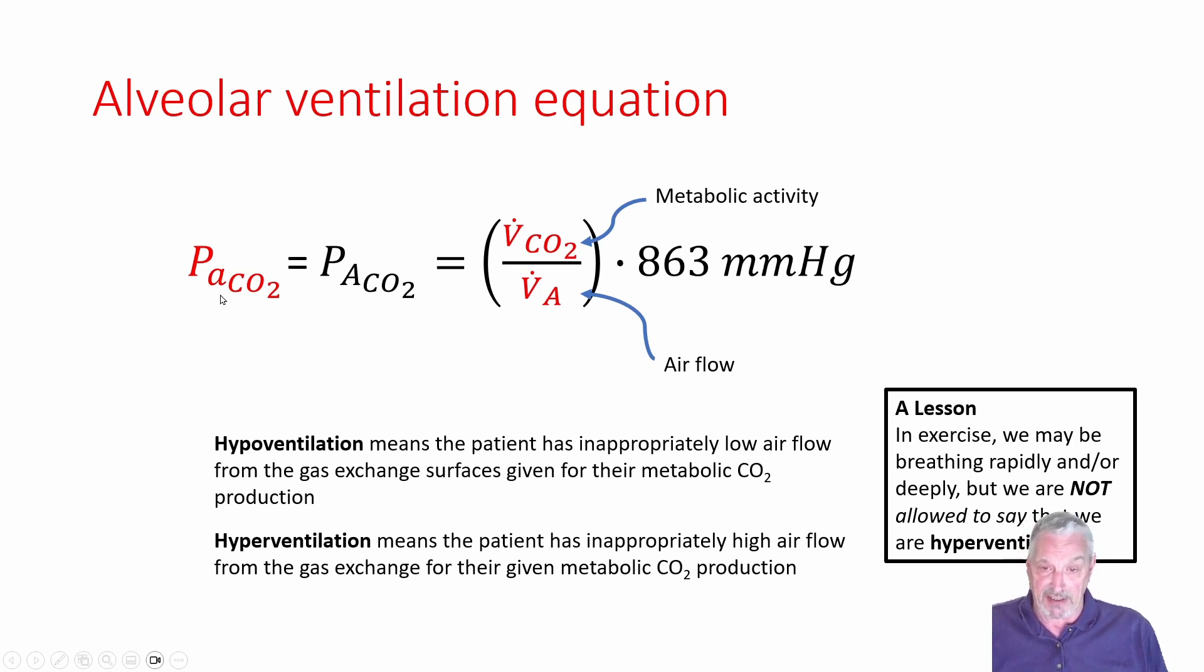Let's take just a little bit closer look at what do we mean by saying when the patient's CO2 is high, they're hypoventilating. What we mean is, in terms of normal, is their airflow from their gas exchange surfaces low in proportion to the rate at which you need to get rid of CO2 in proportion to their metabolic activity. So we can redefine hypoventilation as meaning the patient has an inappropriately low airflow from their gas exchange surfaces given their metabolic CO2 production. And we can define hyperventilation as the patient having an inappropriately high airflow from their gas exchange surfaces given their metabolic CO2 production.